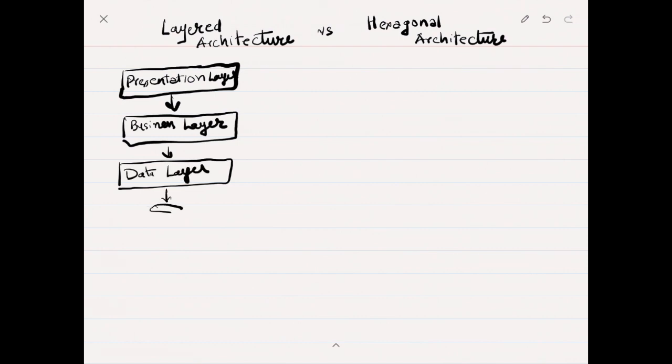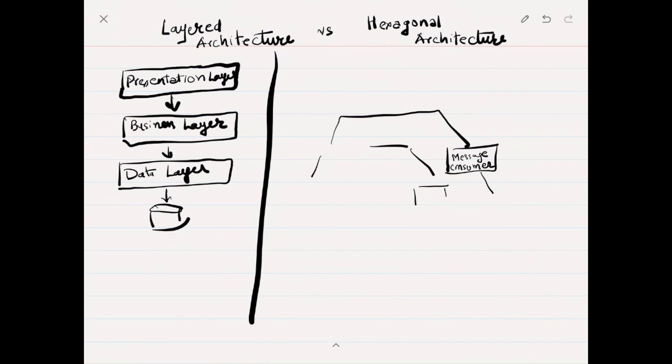This is a typical three-tiered or N-tier architecture. Let's see the hexagonal architecture. Hexagonal architecture puts the business logic at the core. I have started from the outline. We have a message consumer at the core.